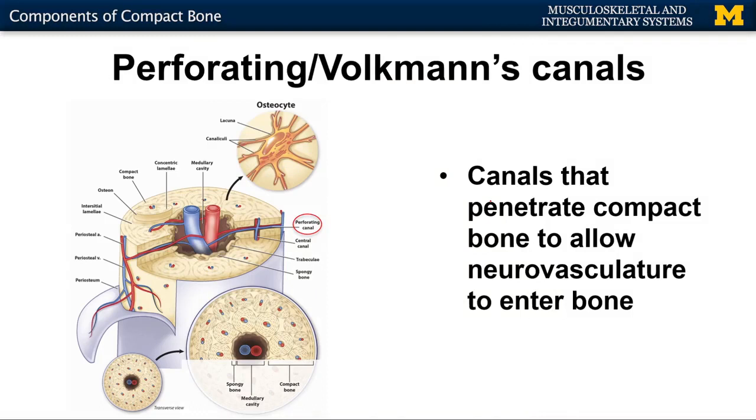In order for neurovasculature to get into the bone, you're going to have perforating or Volkmann's canals. These are transverse canals that lead into the central canal, penetrating not only the periosteum but also the compact bone to allow the neurovasculature to enter. This is really important — without the arterial supply delivering oxygen and nutrients, the bone wouldn't be able to change. There are perforating canals throughout the entirety of the bone.